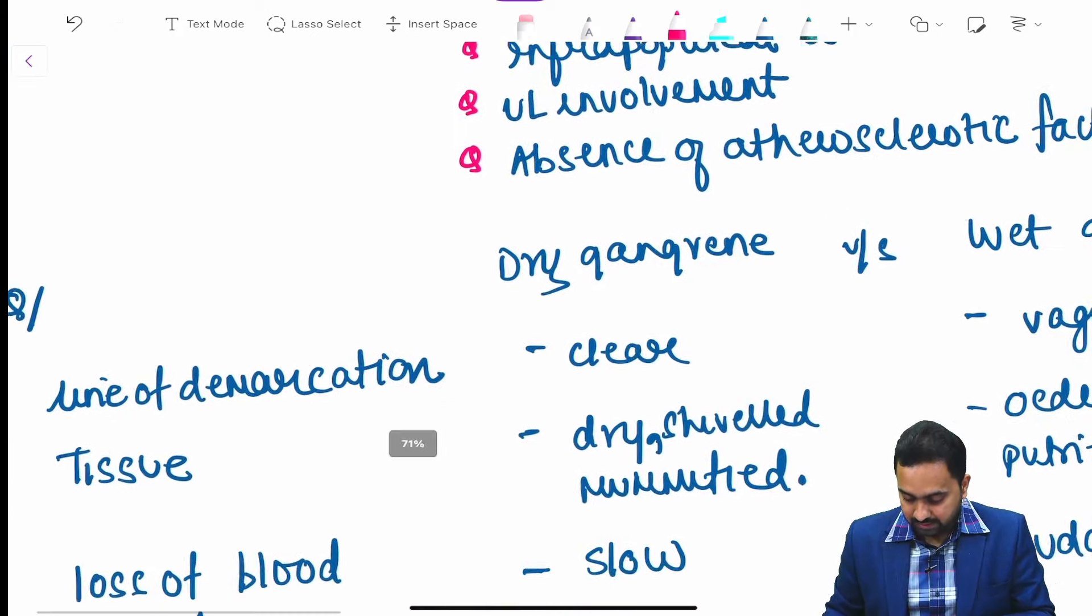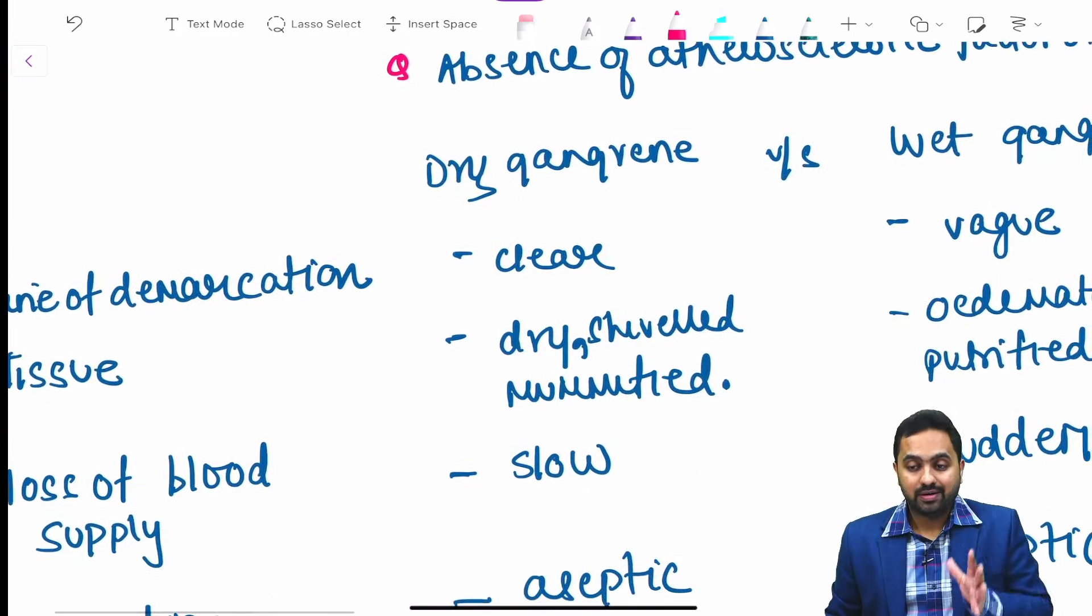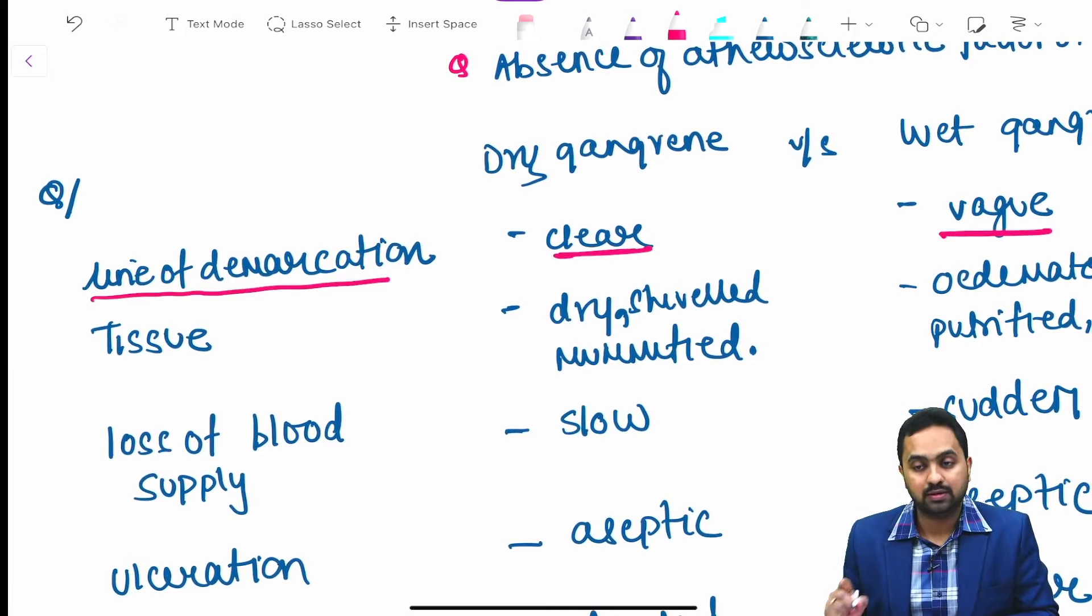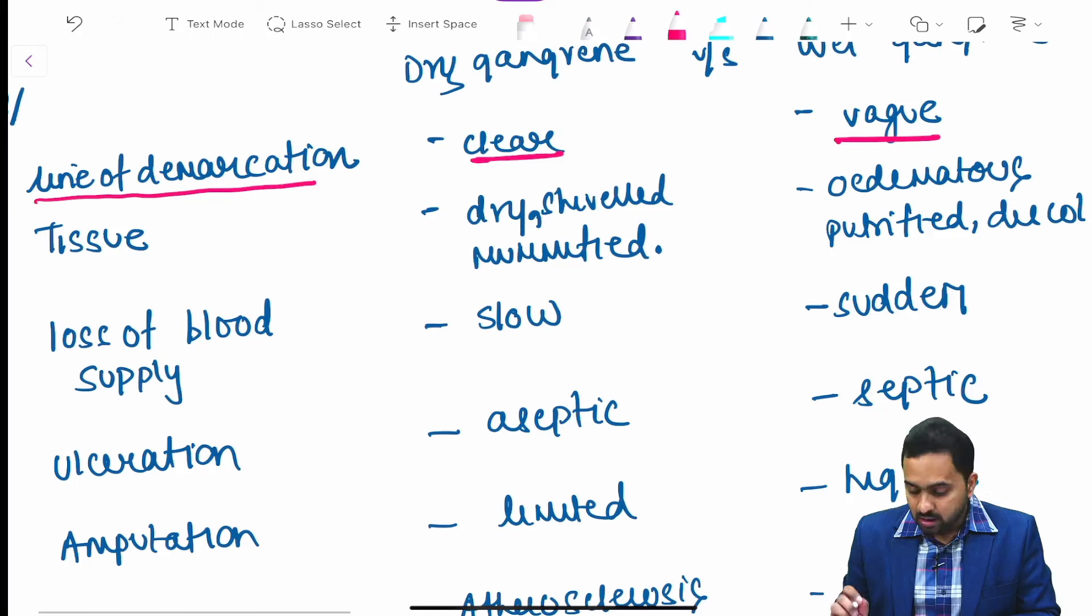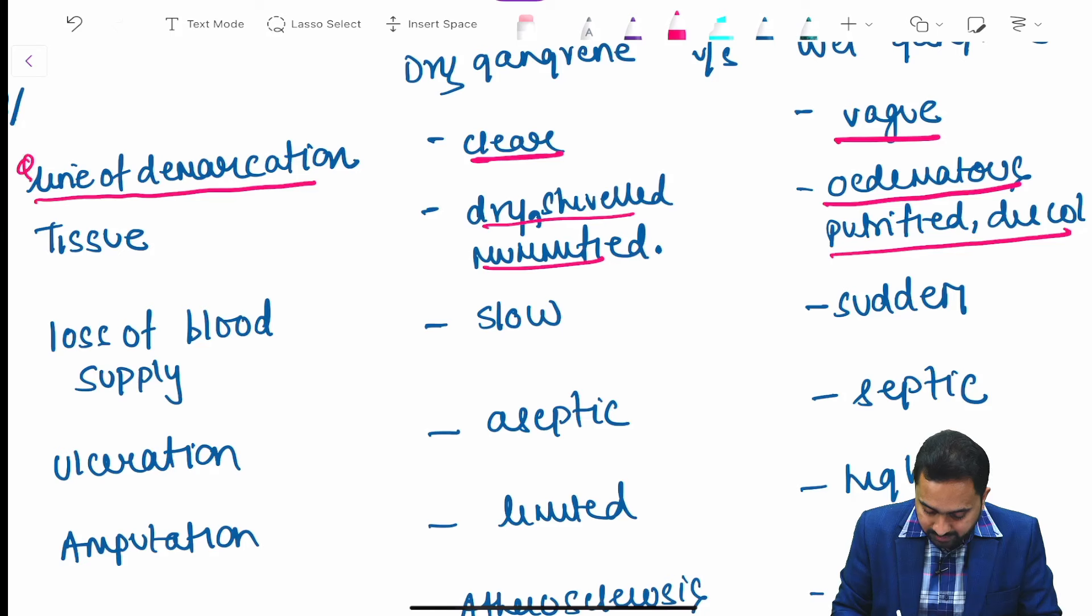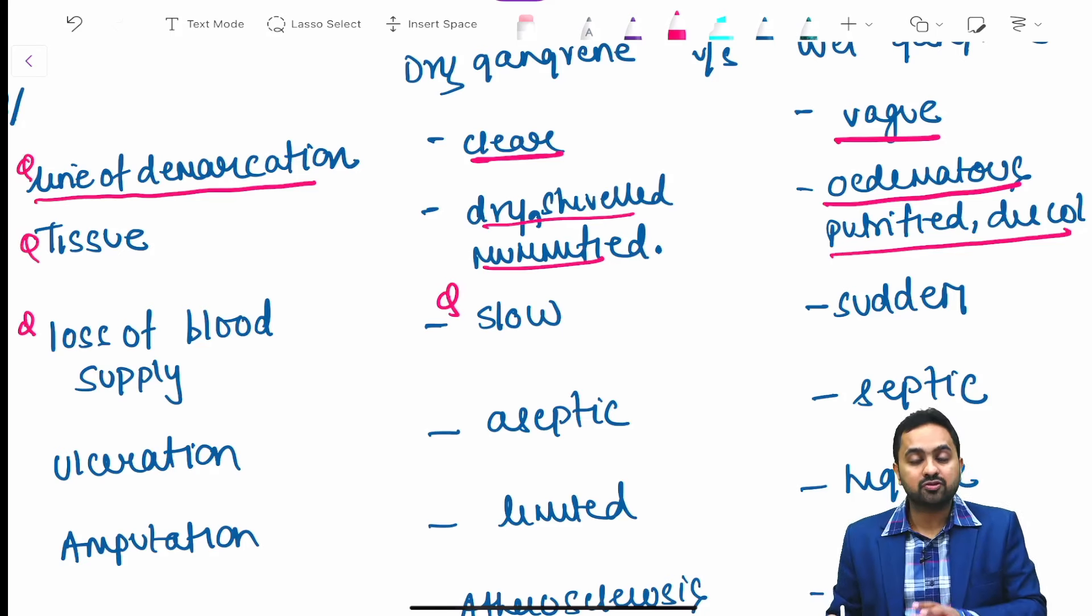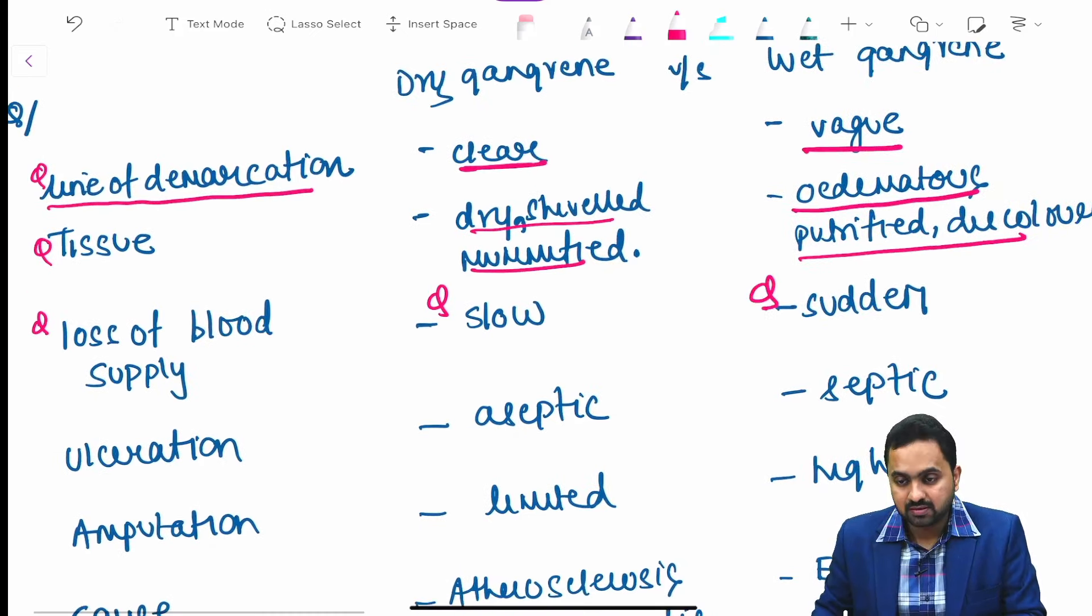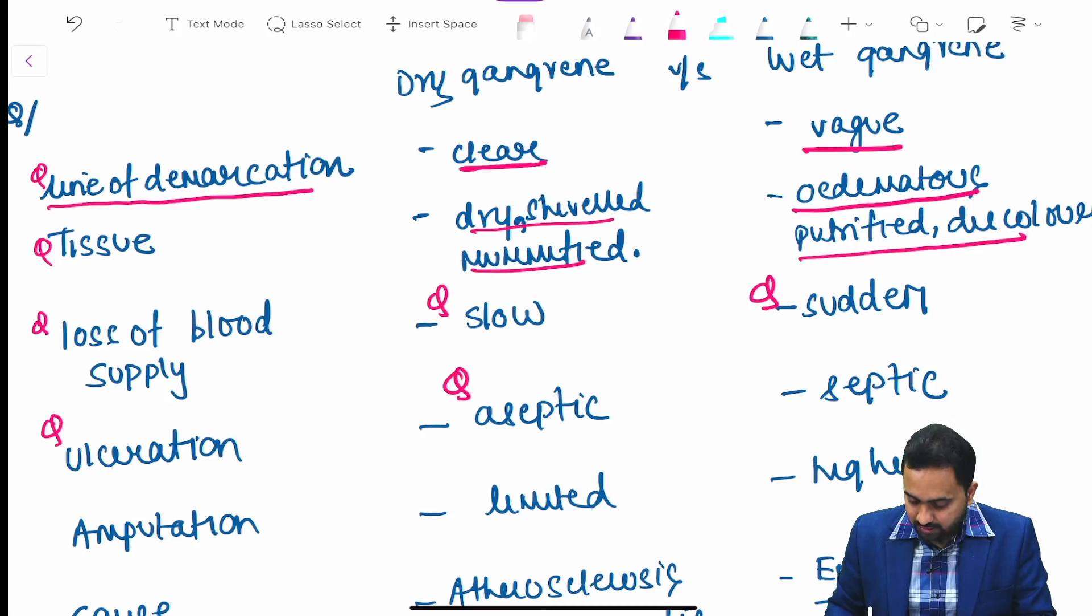Moving to dry gangrene versus wet gangrene. Line of demarcation is clear in dry gangrene, vague in wet gangrene. Tissue appears dry, shriveled and mummified in dry gangrene, whereas edematous, putrefied and discolored in wet gangrene. Loss of blood supply is slow and gradual in dry gangrene, whereas sudden in wet gangrene. Ulceration is usually aseptic in dry gangrene and septic in wet gangrene.